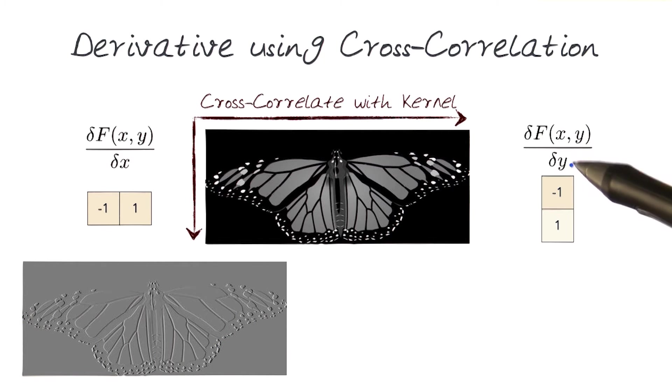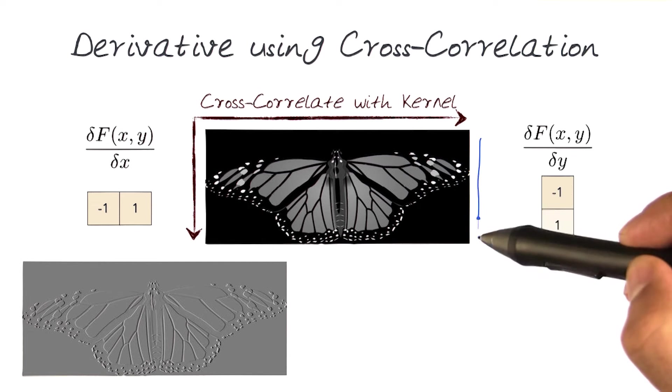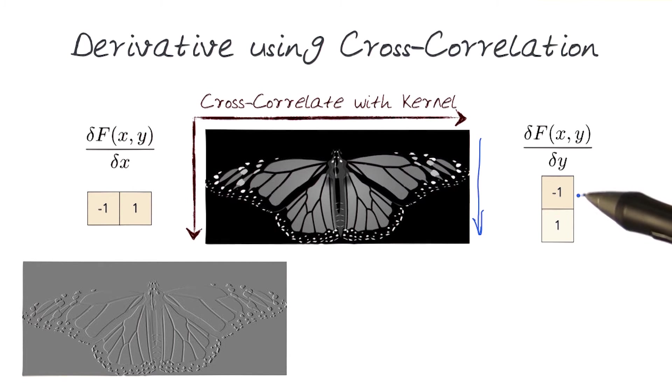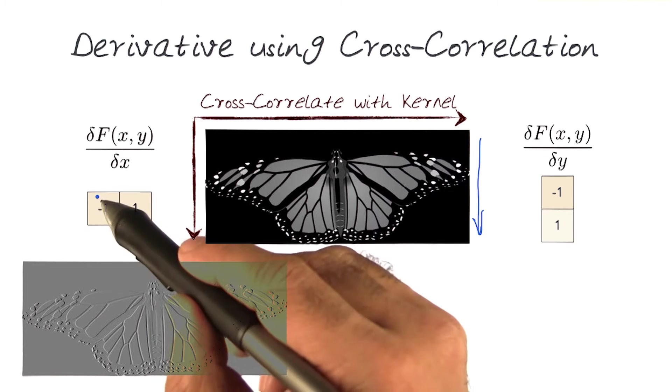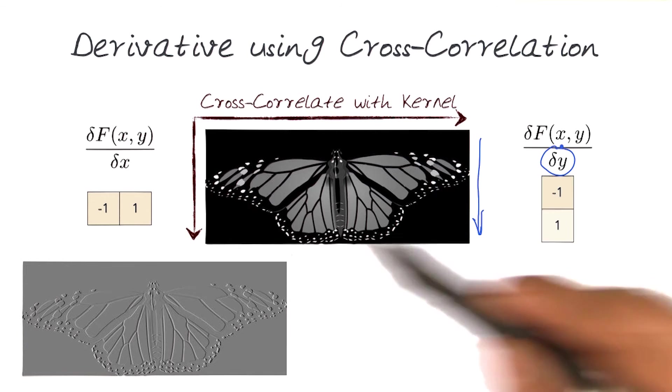Similarly, for del y, change in y, we need to create a filter that has, and looks for the derivative change in this direction, which is basically minus 1 and 1 here. Again, we showed the example in the last slide of this. But in this case, of course, we would do this for y, this was for del x.